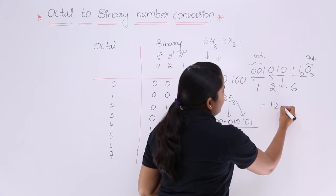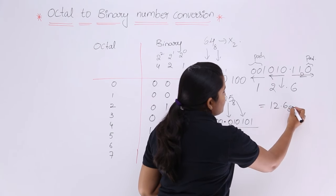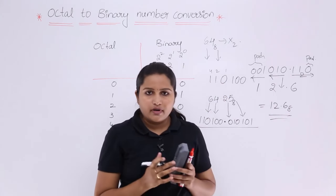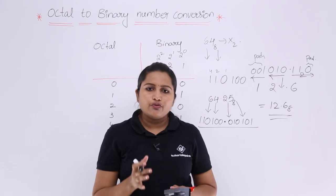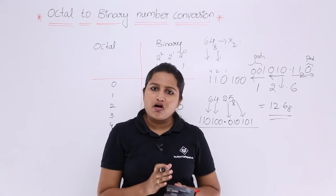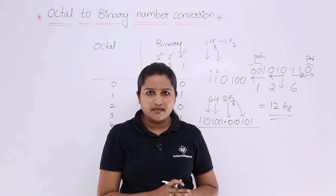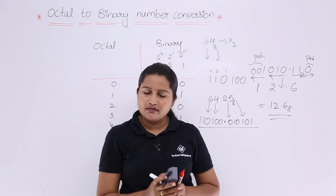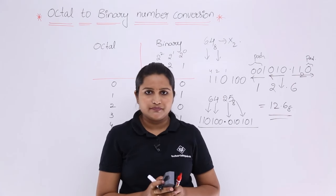So the binary number is equivalent to 12.6 in octal. Like this we can convert any octal to binary and binary to octal vice versa.